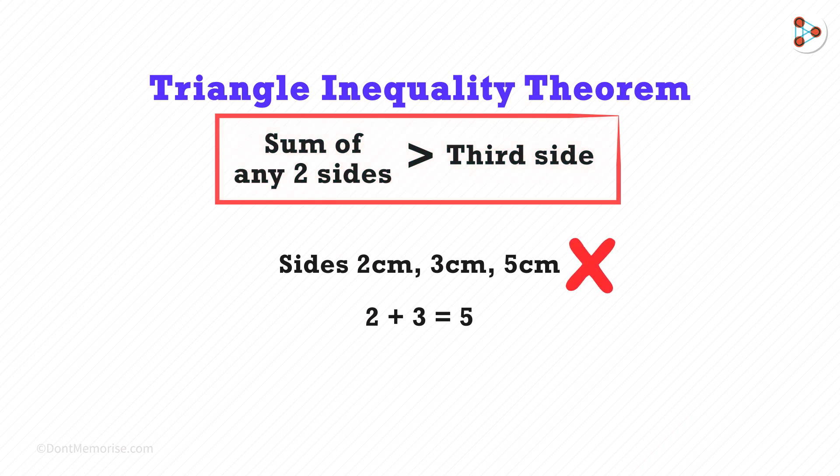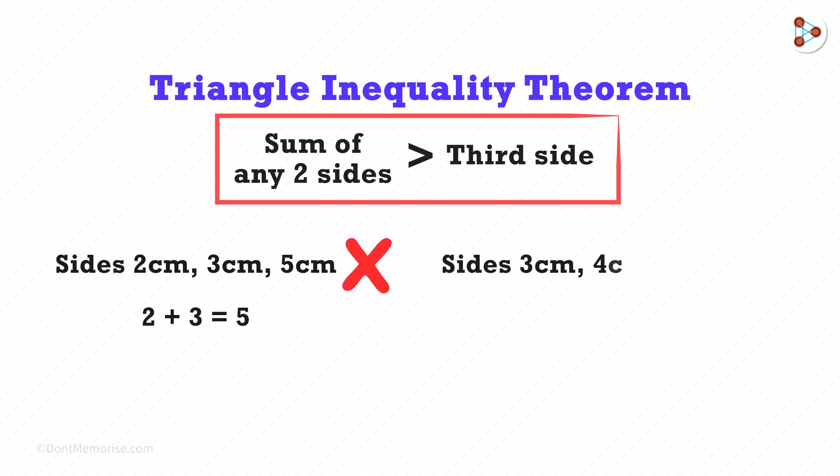Hence, it is impossible to draw a triangle with sides 2, 3 and 5 units. Now what if I say that the sides of a triangle are 3, 4 and 5? Is it possible to draw such a triangle?